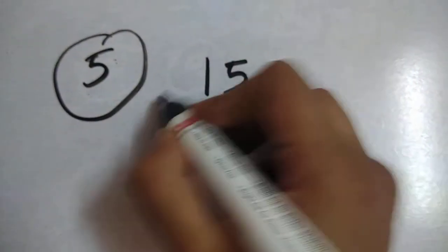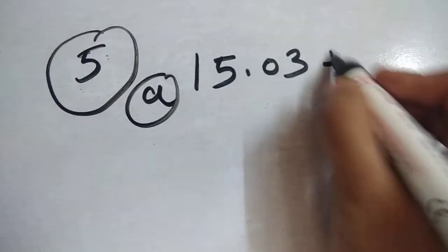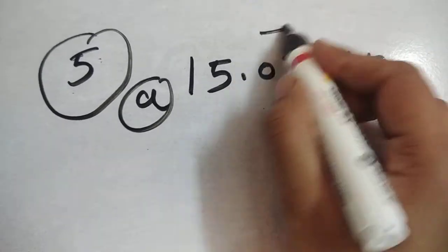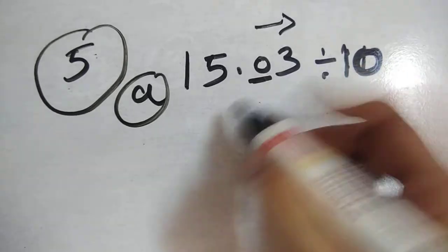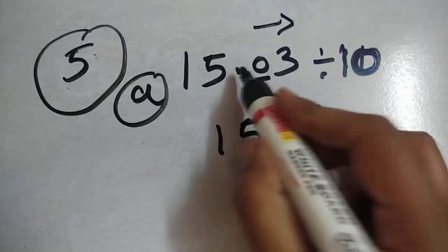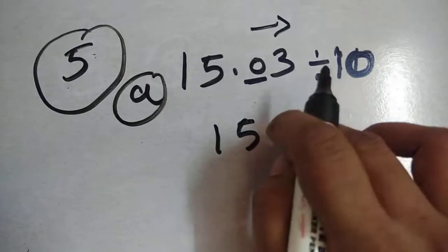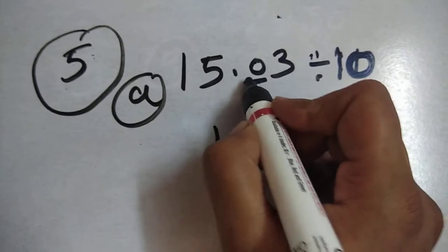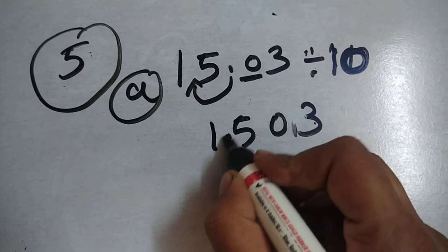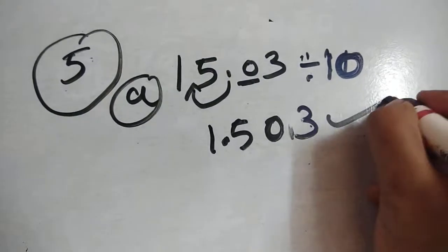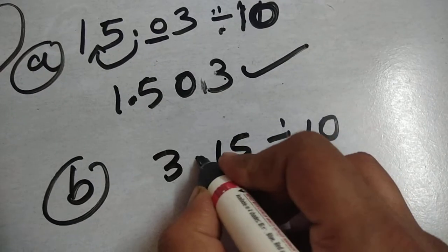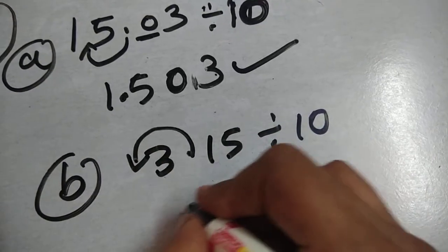In question number 5, divide the following by 10. When we divide any number by 10, the decimal point shifts one place to the left, because there is one zero in 10. If we multiply, the decimal shifts right; if we divide, it shifts left. Similarly in part b, 3.15 divided by 10 — the decimal shifts one digit to the left, giving 0.315.